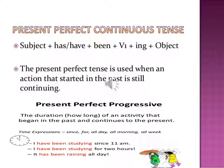Since is used to refer to the point of time at which an action started. That is, if we know the exact beginning of the action, then we use 'since'. For example, since Monday, since Tuesday, since 2008, since the 15th of this month, etc.